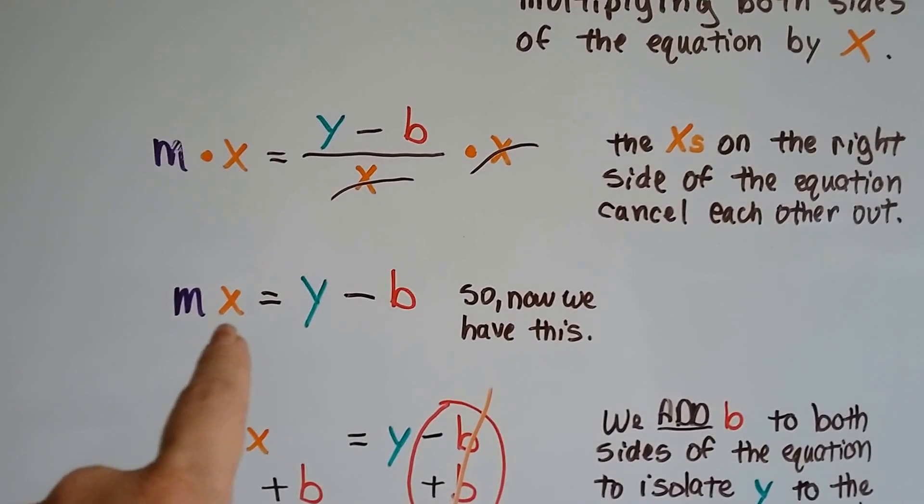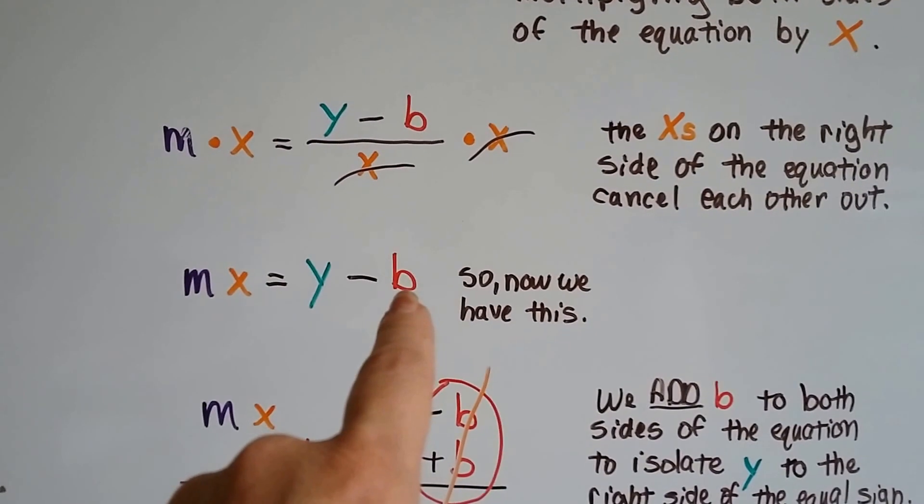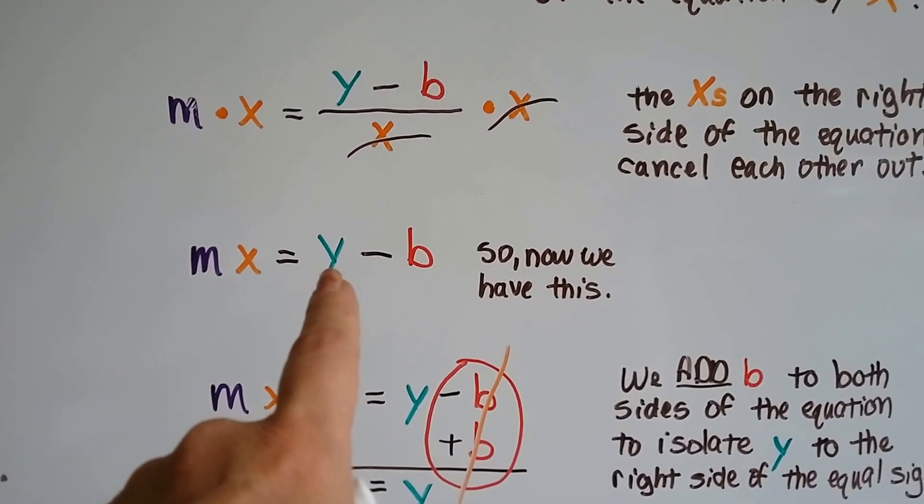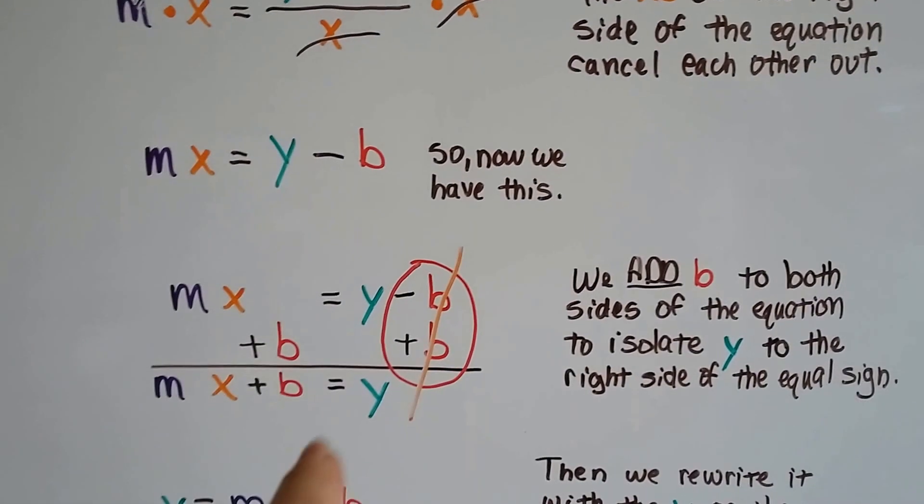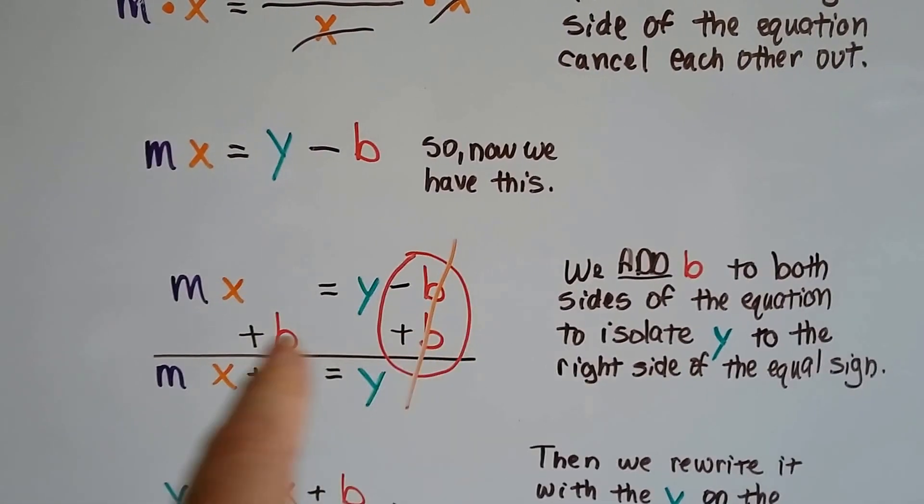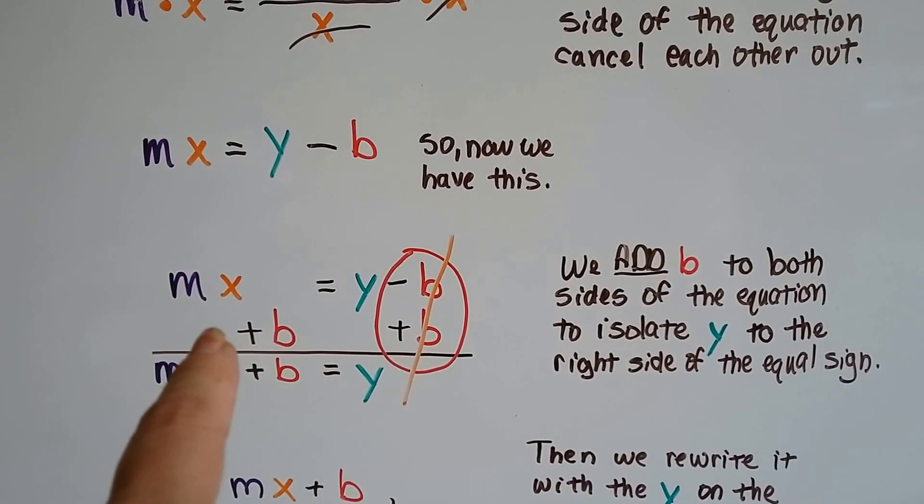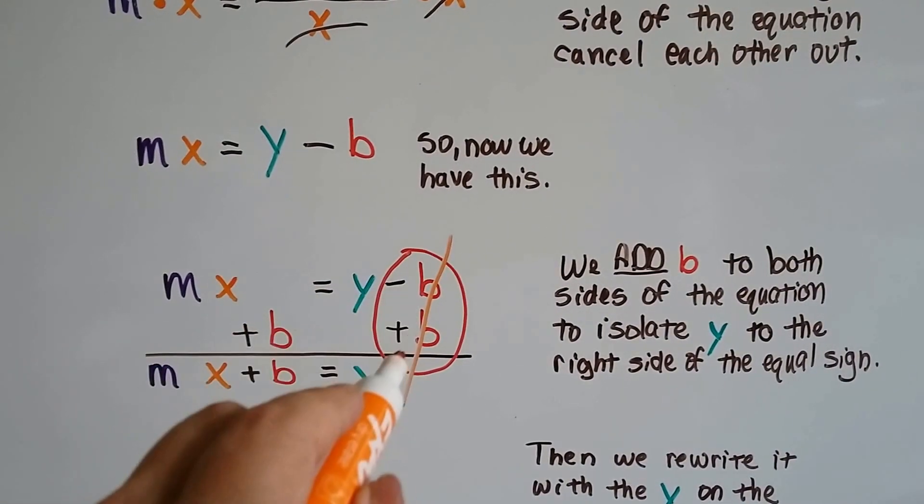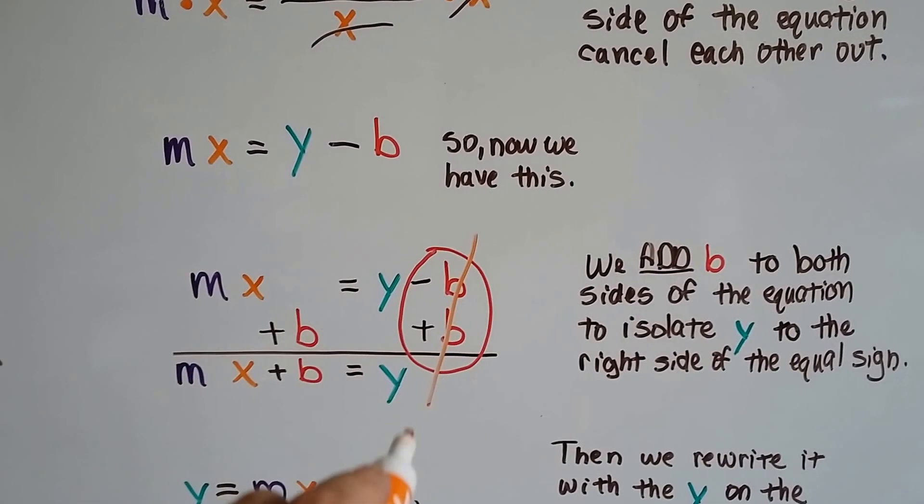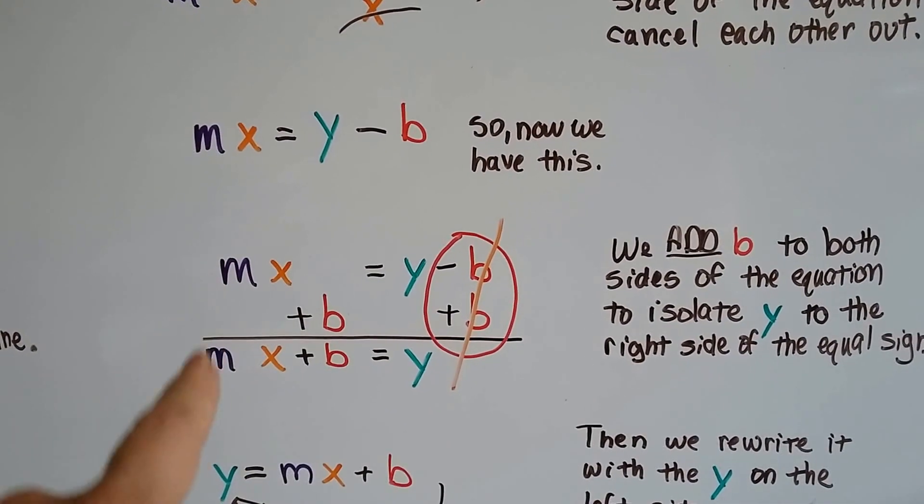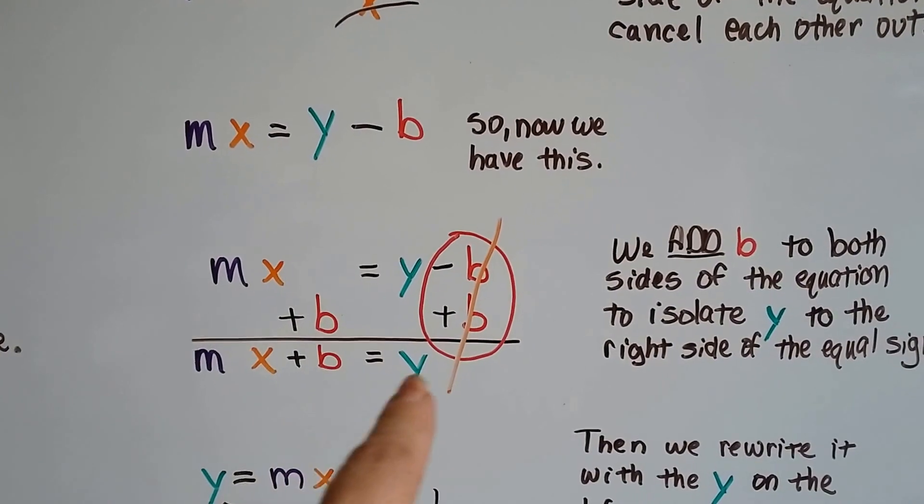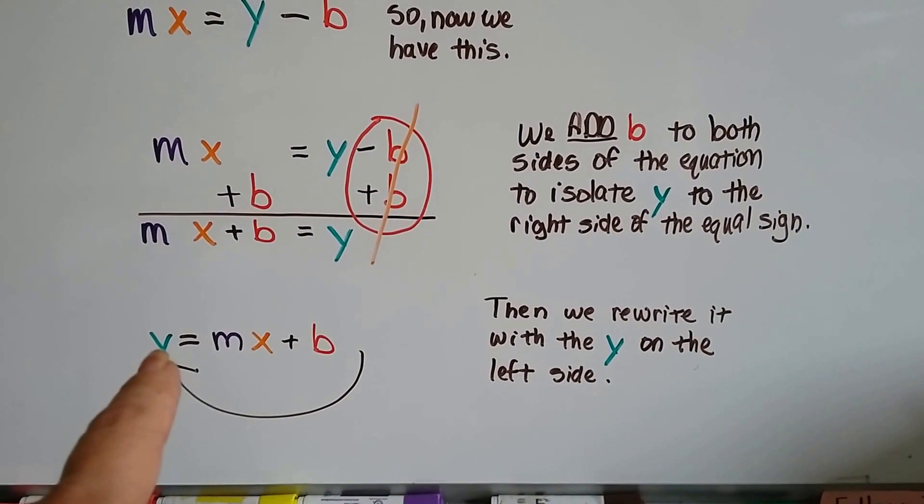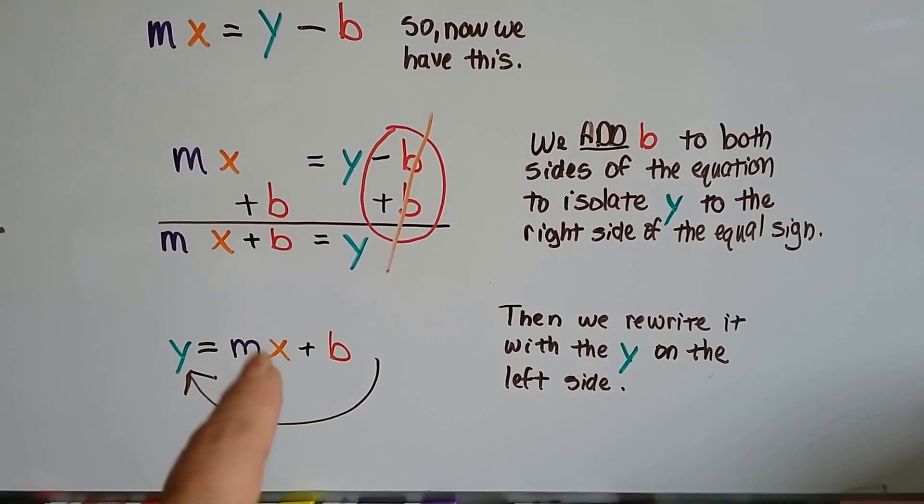So now all we're left with is m times x equals y minus b. Now we need to get rid of this minus b so we can isolate that y. So we add b to both sides of the equation to isolate that y. And the minus b plus b creates a zero pair and cancels out. And now we have mx plus b equals y. We just rewrite it with the y on the left-hand side and now it's y equals mx plus b.